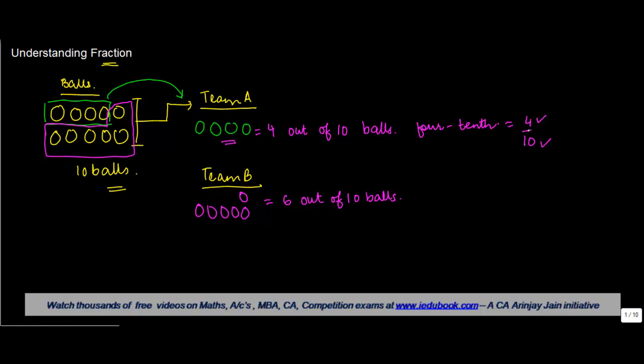When you write this as 4 upon 10, also read as 4 by 10, what this means is that out of a total of 10 balls, 4 balls were given to team A.